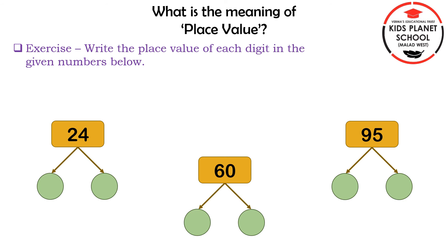Our next exercise is to write the place value of each digit in the numbers given below. Our first number is 24. In the number 24, we have 2 tens and 4 units. So the place value of 2 is 20, and the place value of 4 is 4. Our second number is 60. In the number 60, we have 6 tens and 0 units. So the place value of 6 is 60, and the place value of 0 is 0.